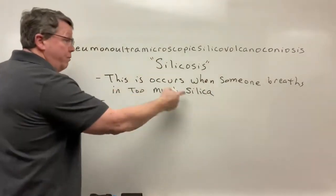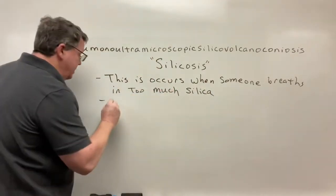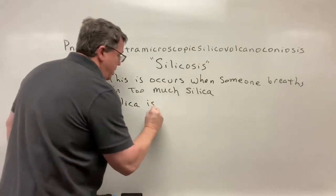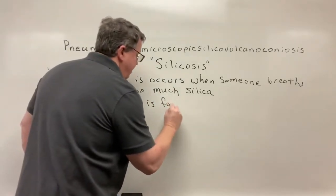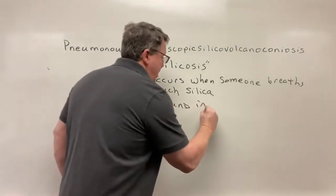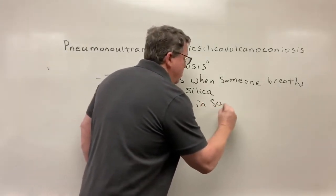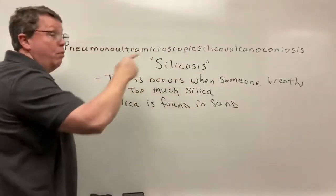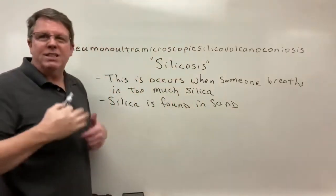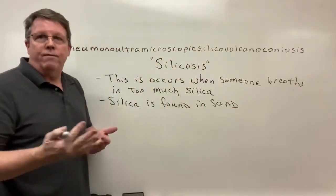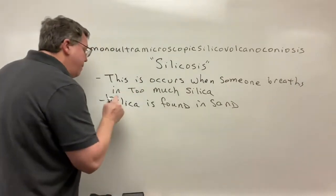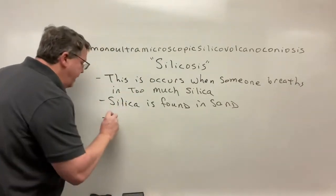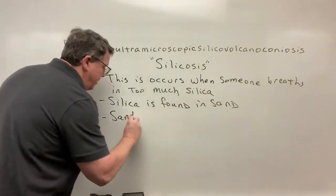Silica is also found in sand. The people most likely to get this are not only those near a volcano, which is very rare, but also people who do sandblasting.